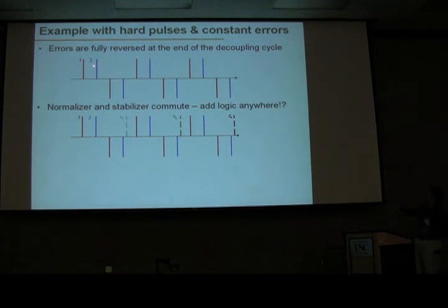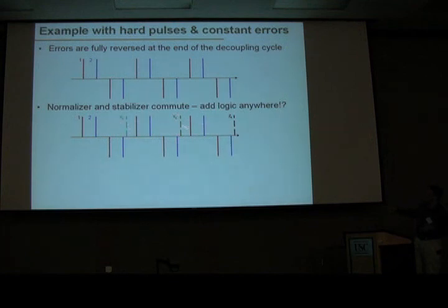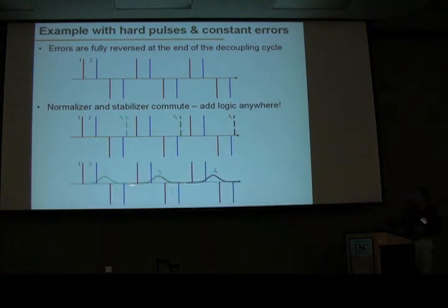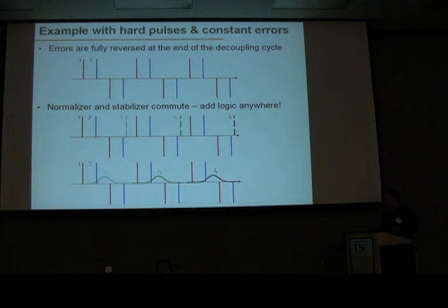Here is an example: I have decoupling cycles with stabilizer 1, stabilizer 2, stabilizer 1 minus, stabilizer 2 minus — these are the decoupling pulses — and then I run my logical pulses at basically an arbitrary time. In this case x, y, z, which totals to the identity operator. I could choose some other logical pulses if I wish. Moreover, even in the same setting, you can try to do that slowly and adiabatically run the logic, and because of this commuting structure it doesn't appear to pose any problem.